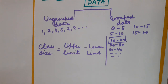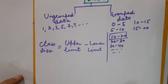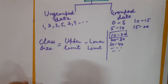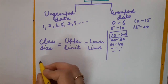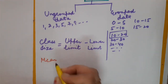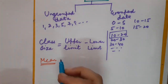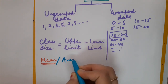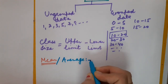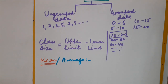My next topic is central tendencies. There are three central tendencies which you have also learnt in class 9th: mean, mode, and median. Today I am going to explain the very first central tendency — that is mean, also called arithmetic mean or average.